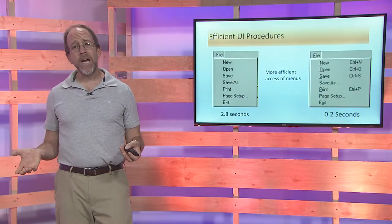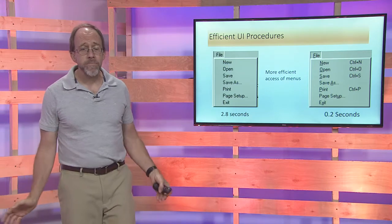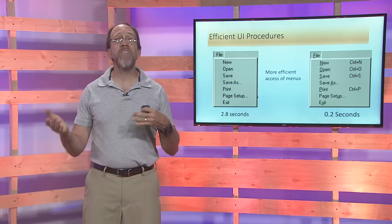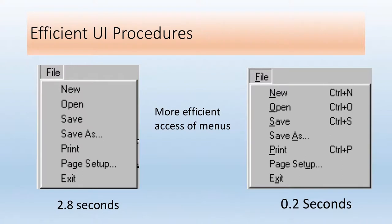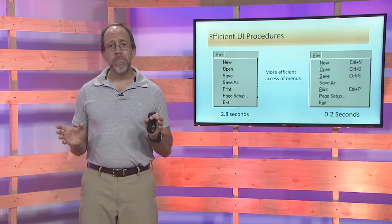So let's look at first the menu. And let's look at the menu in terms of efficiency. We have a menu here and another menu here. It's the same menu. The novice user, 2.8 seconds, pull down, pull down, pick. The expert user, control O, control S, 0.2 seconds. But it's the same menu.